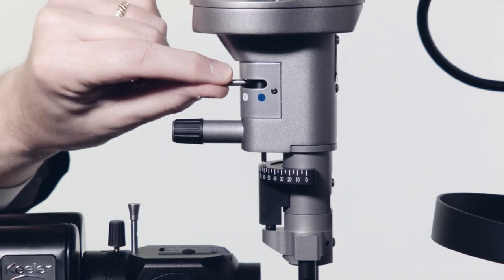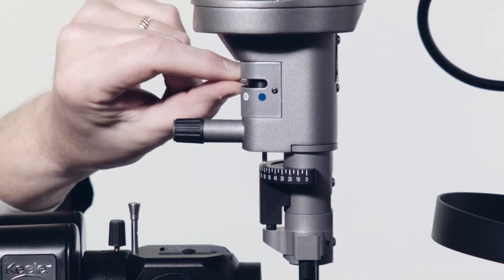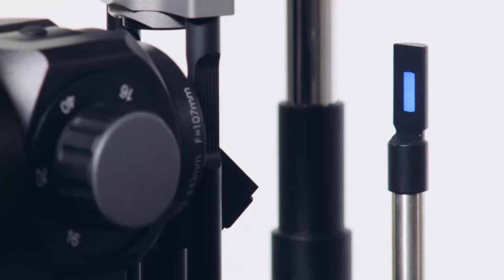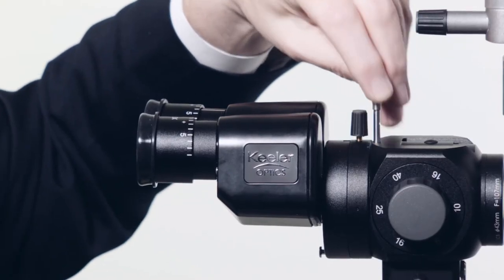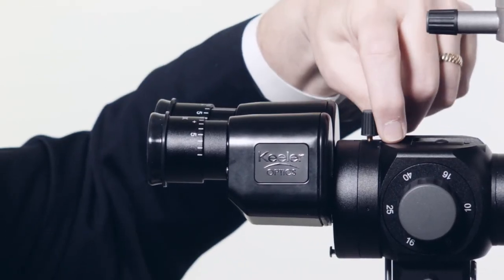The K-Series slit lamp offers a full range of filters required for examination. These filters are blue, neutral density diffuser, red free and clear. The yellow filter can be inserted and displaced by using this plunger.